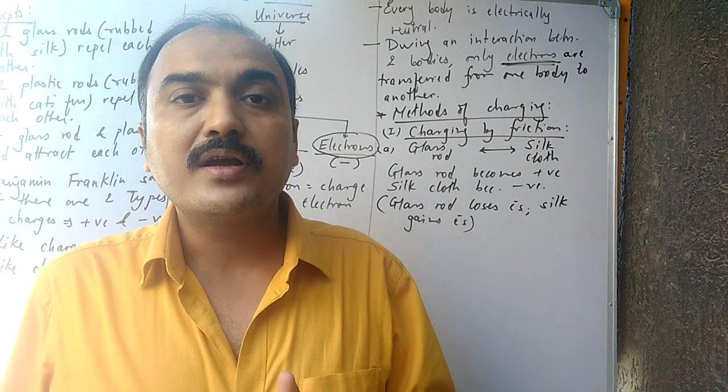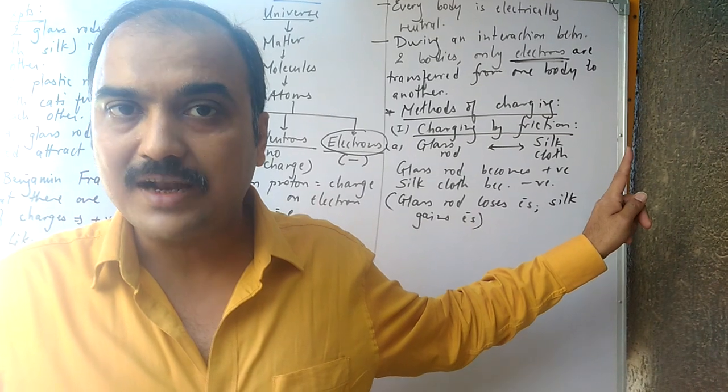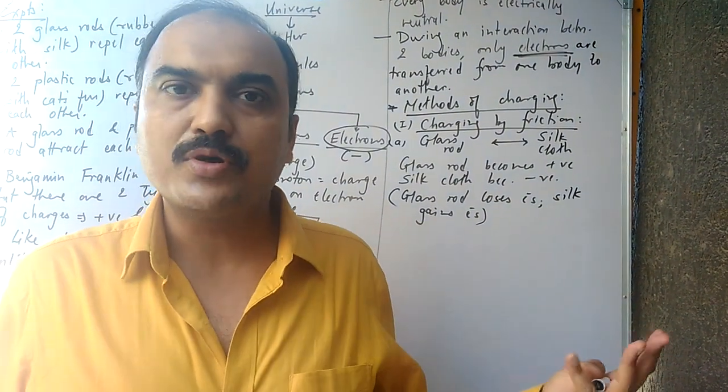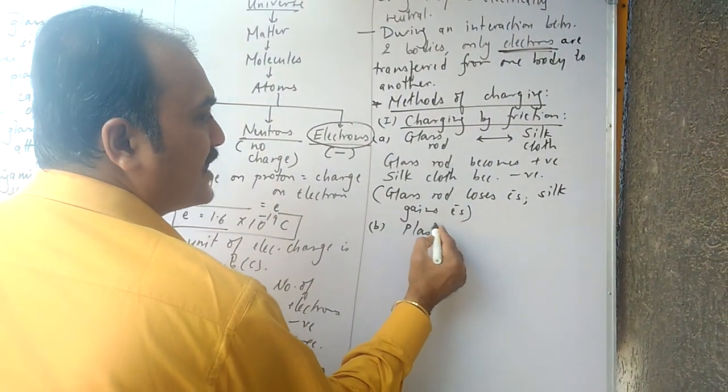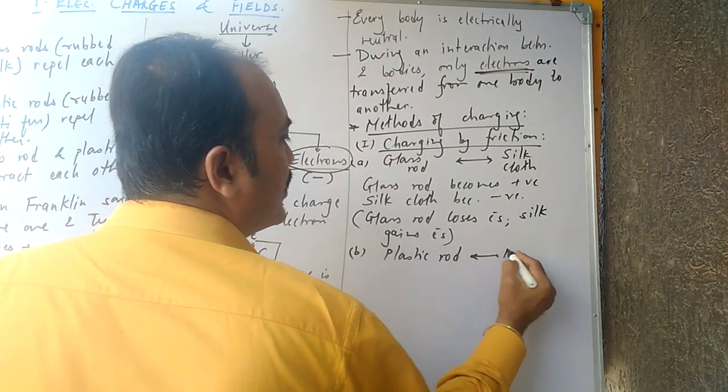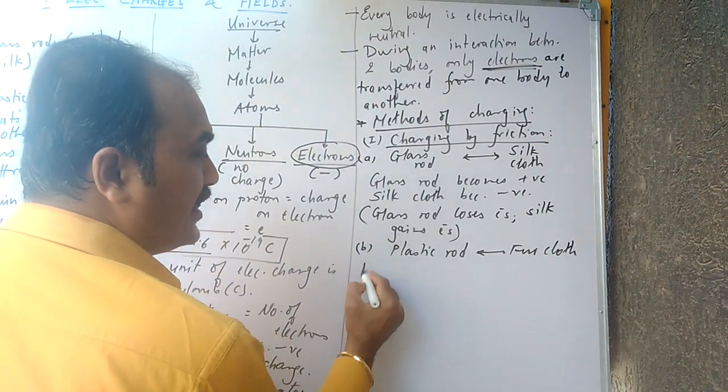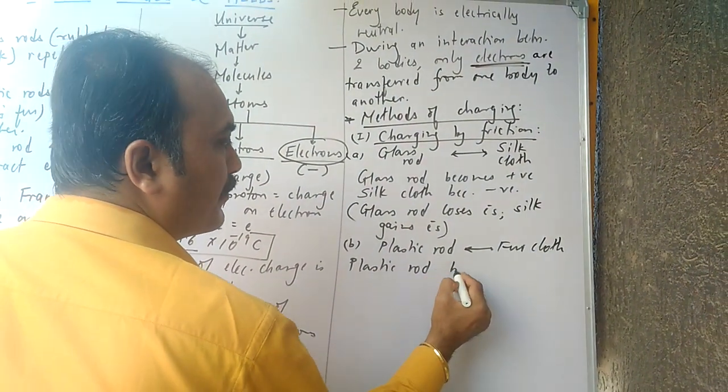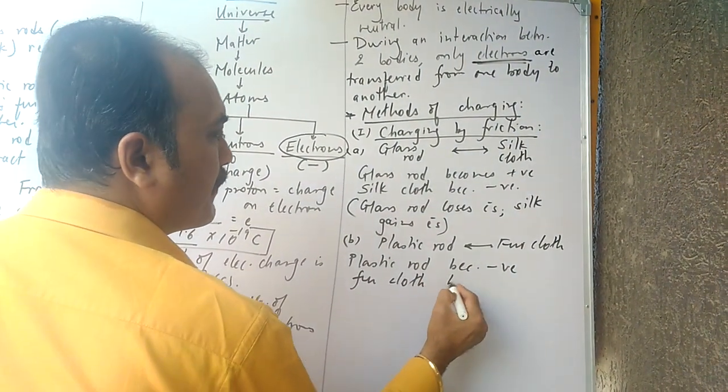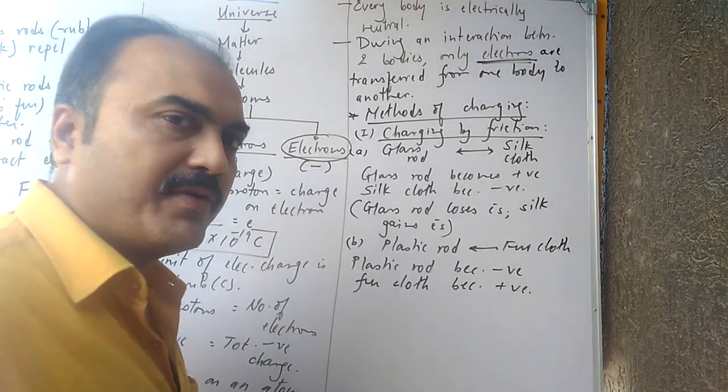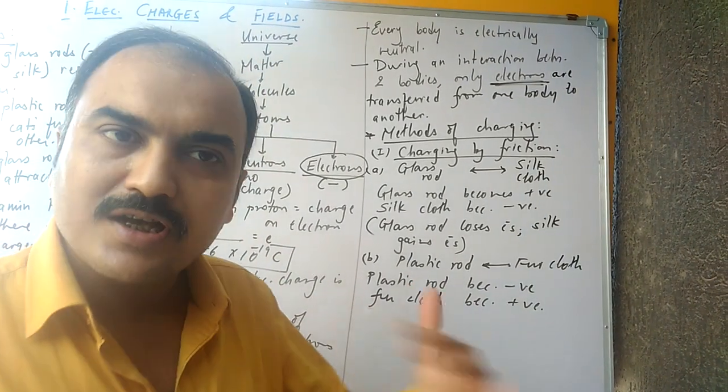No body can become positive by accepting protons because protons cannot be transferred from one body to another. Only electrons can be transferred. So you lose electrons, you become positive. You gain electrons, you become negative. Similarly, in B, we saw a plastic rod being rubbed with fur cloth. So we saw that plastic rod becomes negative, whereas fur cloth becomes positive.